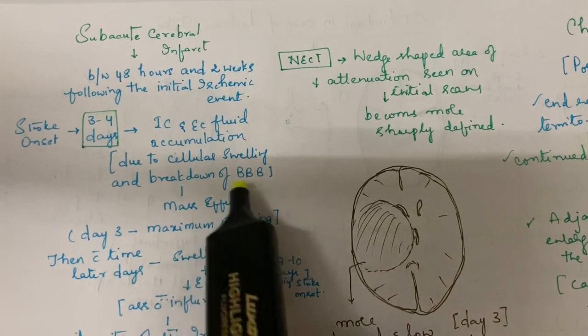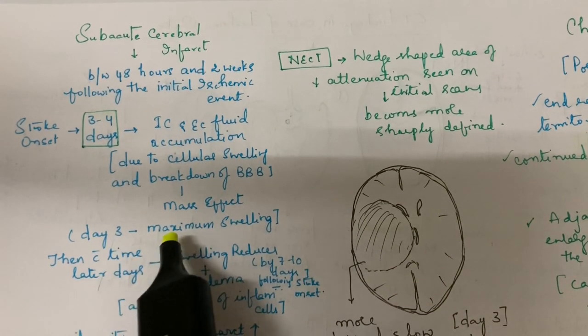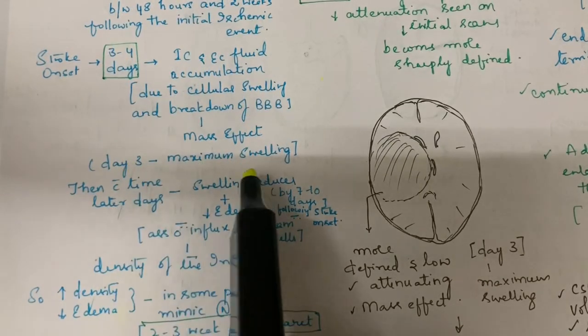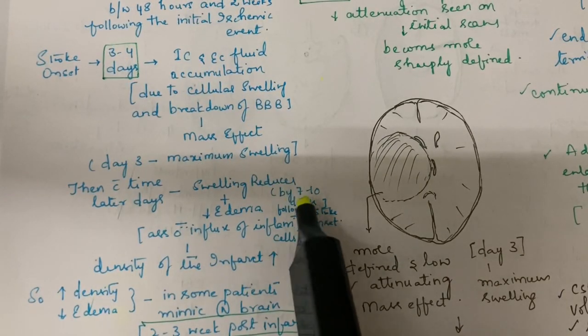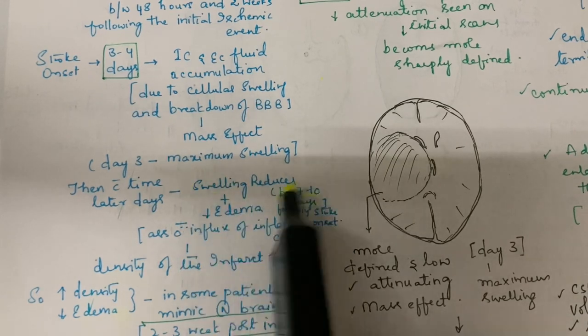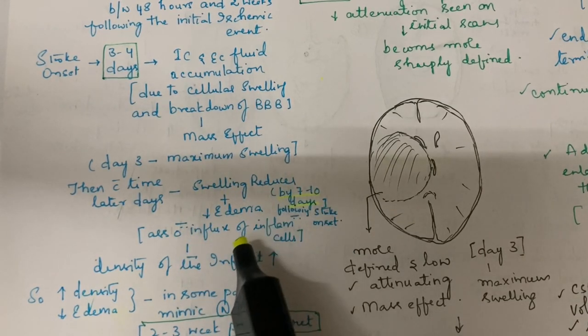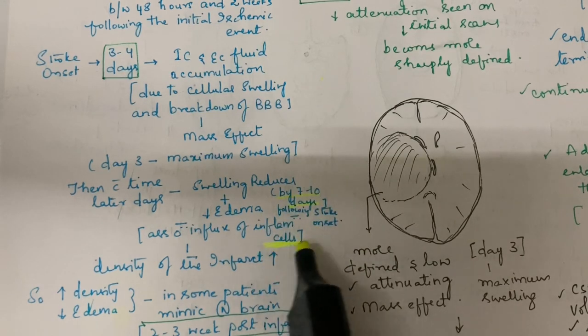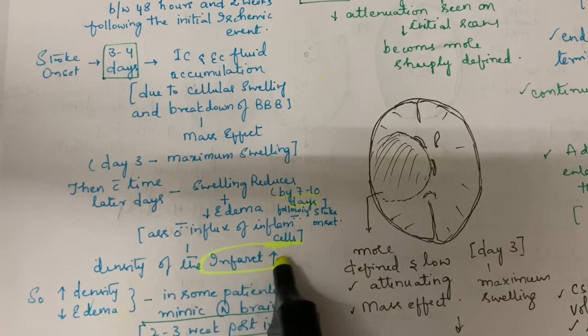Due to this mass effect, especially on day three, there will be maximum swelling. By day seven to ten, swelling decreases, edema decreases, and there is influx of inflammatory cells. Due to influx of inflammatory cells, the density of the infarct increases.